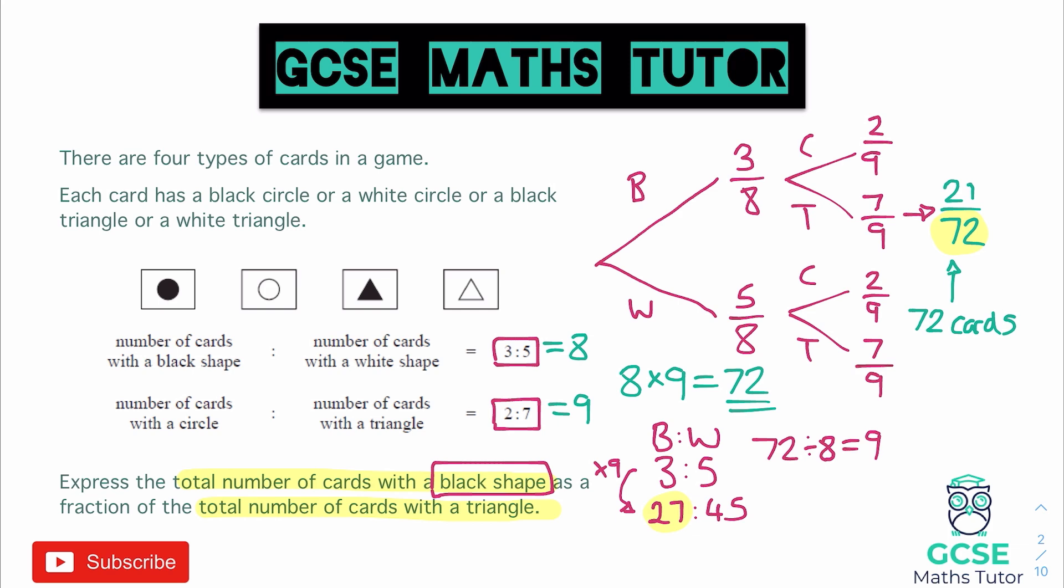And we can do exactly the same for the circles and triangles. So if we split in the circles and triangles ratio there, which is two to seven, that is a total of nine. So we would do 72 divided by nine, which we know is equal to eight.